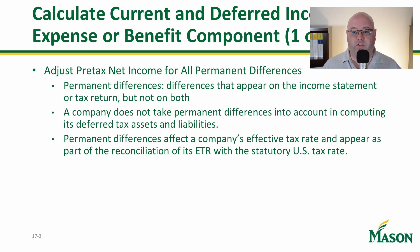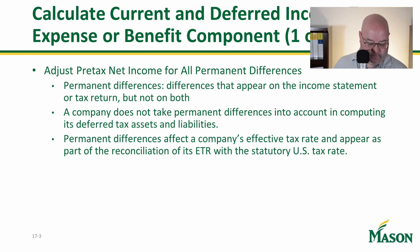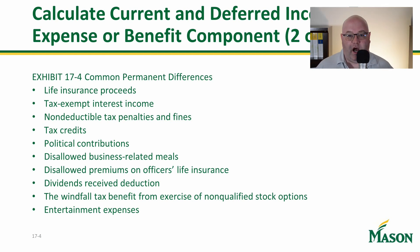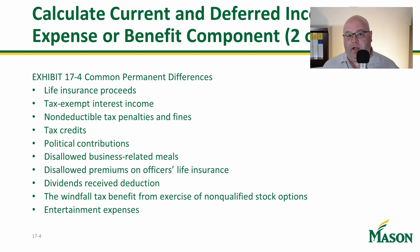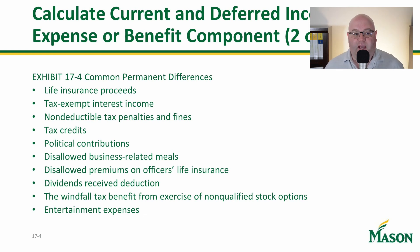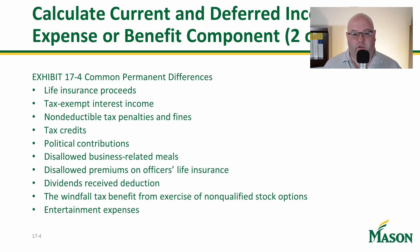The company does not take permanent differences into account when computing deferred tax details. Permanent differences in a company's effective tax rate appear as part of a reconciliation of its ETR to the statutory US tax rate. Common permanent differences include tax credits — probably the biggest one we haven't talked much about. I would recommend looking into it because there are many types of credits that reduce tax liability.